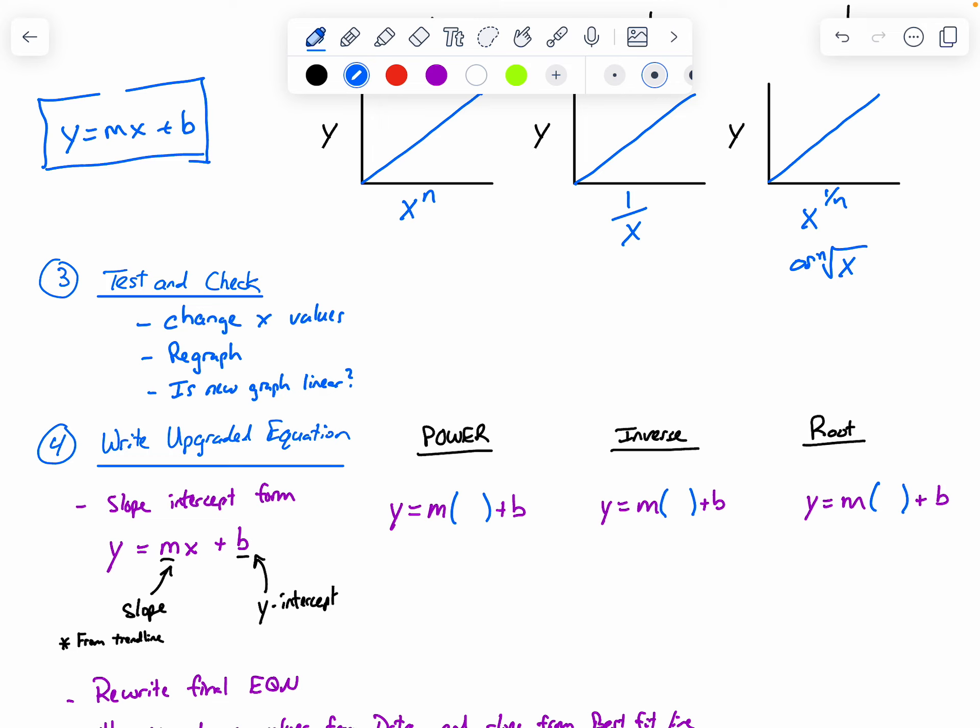So if I look at the power, this x isn't just x by itself anymore, it's now x to the power of n. It could be x squared, x cubed, so on. The inverse is 1 over x, and the root would be like a 1 over x to the fraction, or square root of x, or n root of x, something like that. So those are the things to look at when you're writing your final equations.